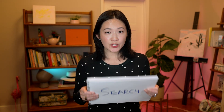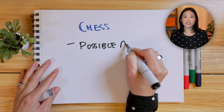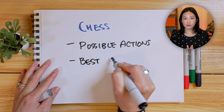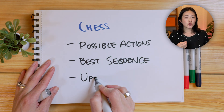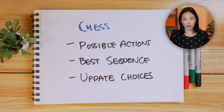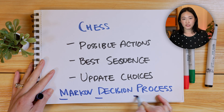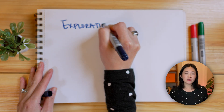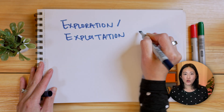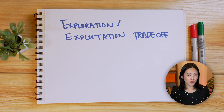When dealing with more complex decisions like solving a puzzle, we can also use an approach called search, which involves planning a sequence of actions. For example, in games like chess, the AI thinks of a range of possible actions, picks the best sequence, and continuously updates its choices based on the outcomes. One foundational tool for search problems is called the Markov Decision Process, or MDP — a way to help AI make decisions in situations where outcomes are uncertain and can change over time. One key challenge in search problems is balancing exploration, which is trying out new things, with exploitation, which is sticking with what works best.